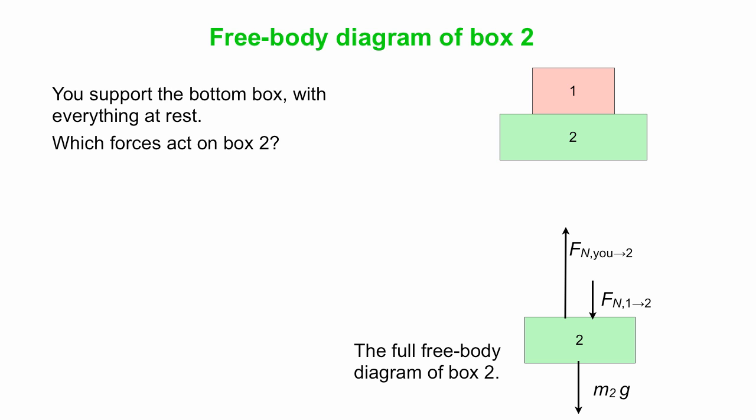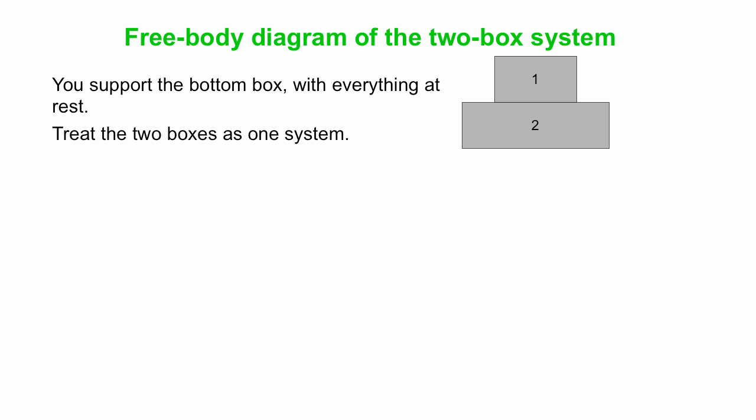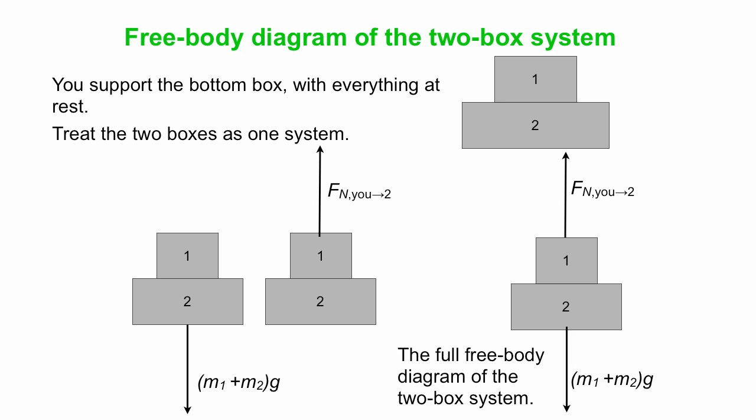We have box two's free body diagram, and we were very careful to label the box one, two interaction as a normal force applied down on box two by box number one, not M1g. Then we looked at the combined system free body diagram and said it's that and this, it combines into that, so just a normal force applied by you and the Earth interaction, M1 plus M2 times g.